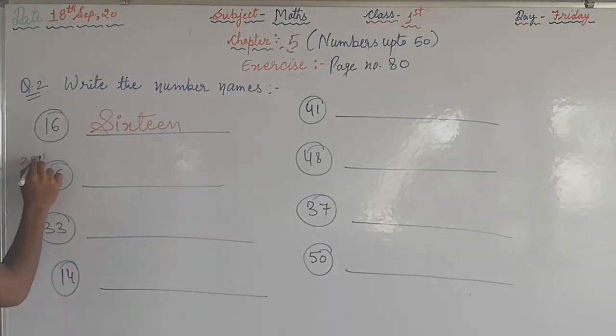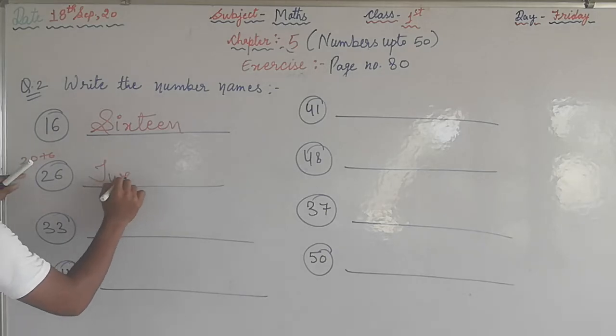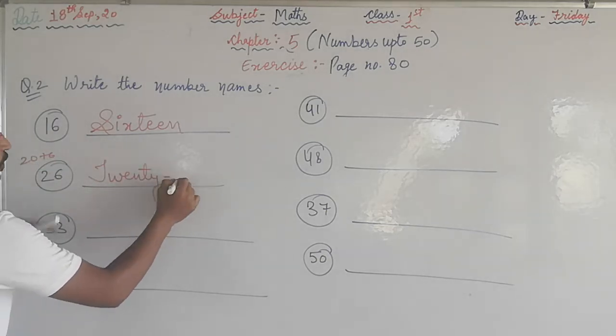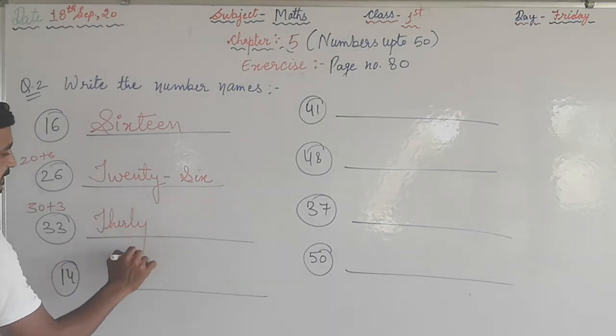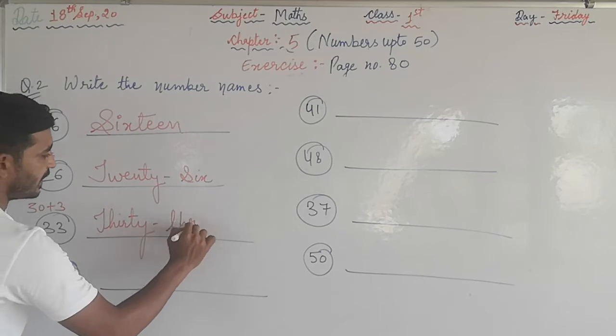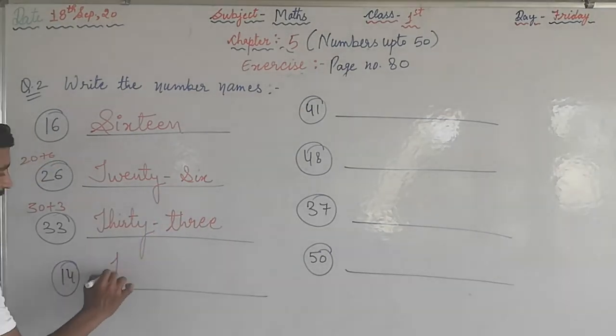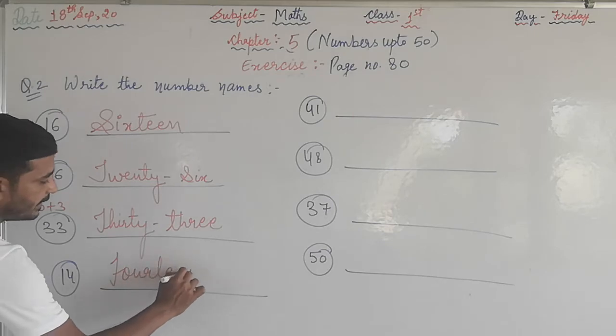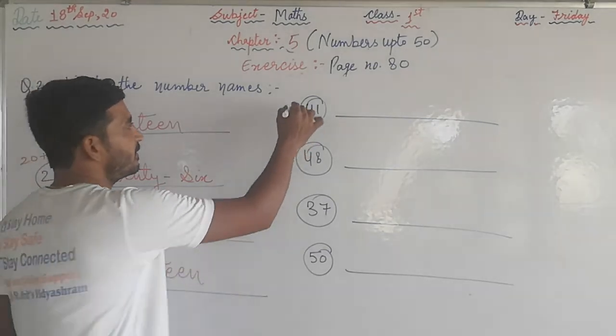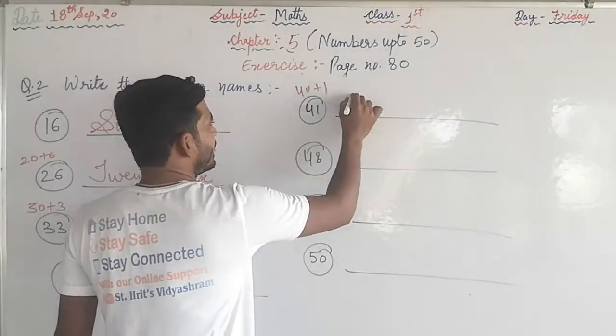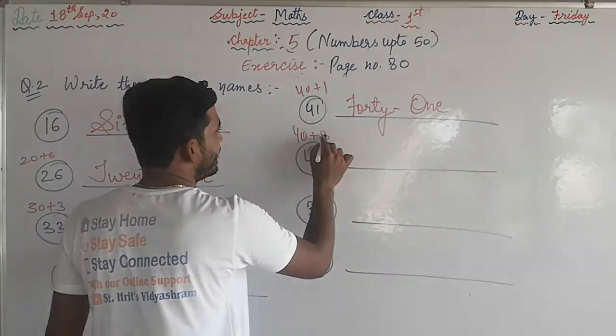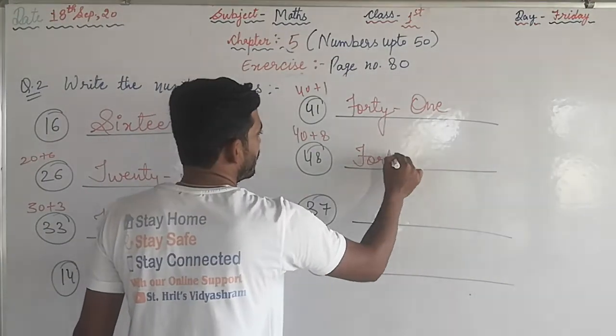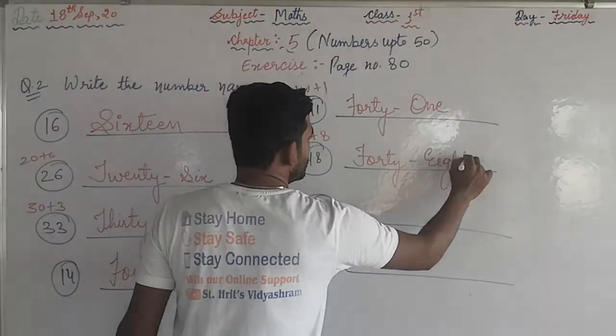16: s-i-x-t-e-e-n, sixteen. 26 means 20 plus 6. 20 first, you write the spelling of 20, that is t-w-e-n-t-y, twenty, and now 6. Next, 33: 30 plus 3, 30 is t-h-i-r-t-y, and 3 is t-h-r-e-e. 14: f-o-u-r-t-e-e-n. Next, 41 means 40 plus 1. 40 is f-o-r-t-y.